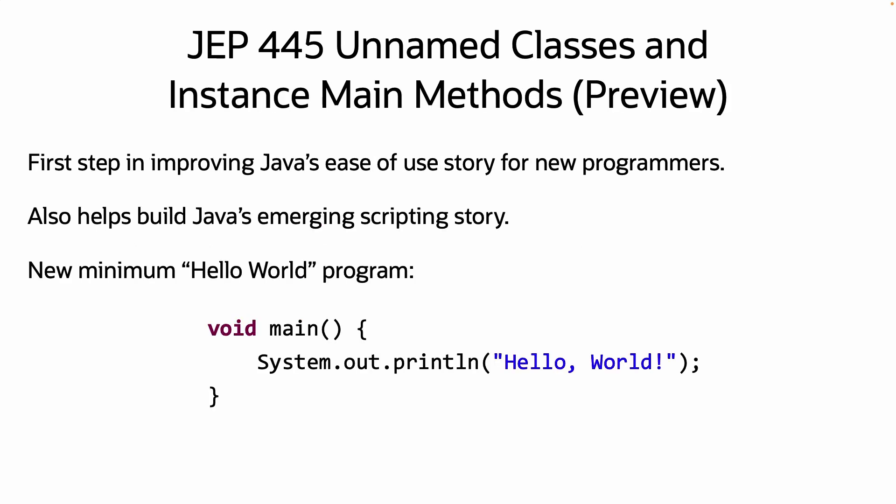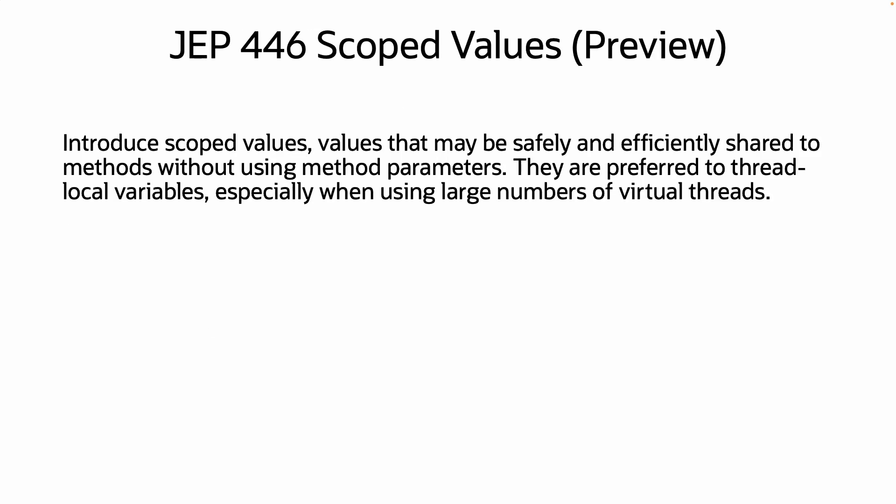JEP 445 is the first of the paving the on-ramp JEPs aimed at making Java easier to learn. As a side effect of these changes, this should improve Java's suitability to writing small utility programs.